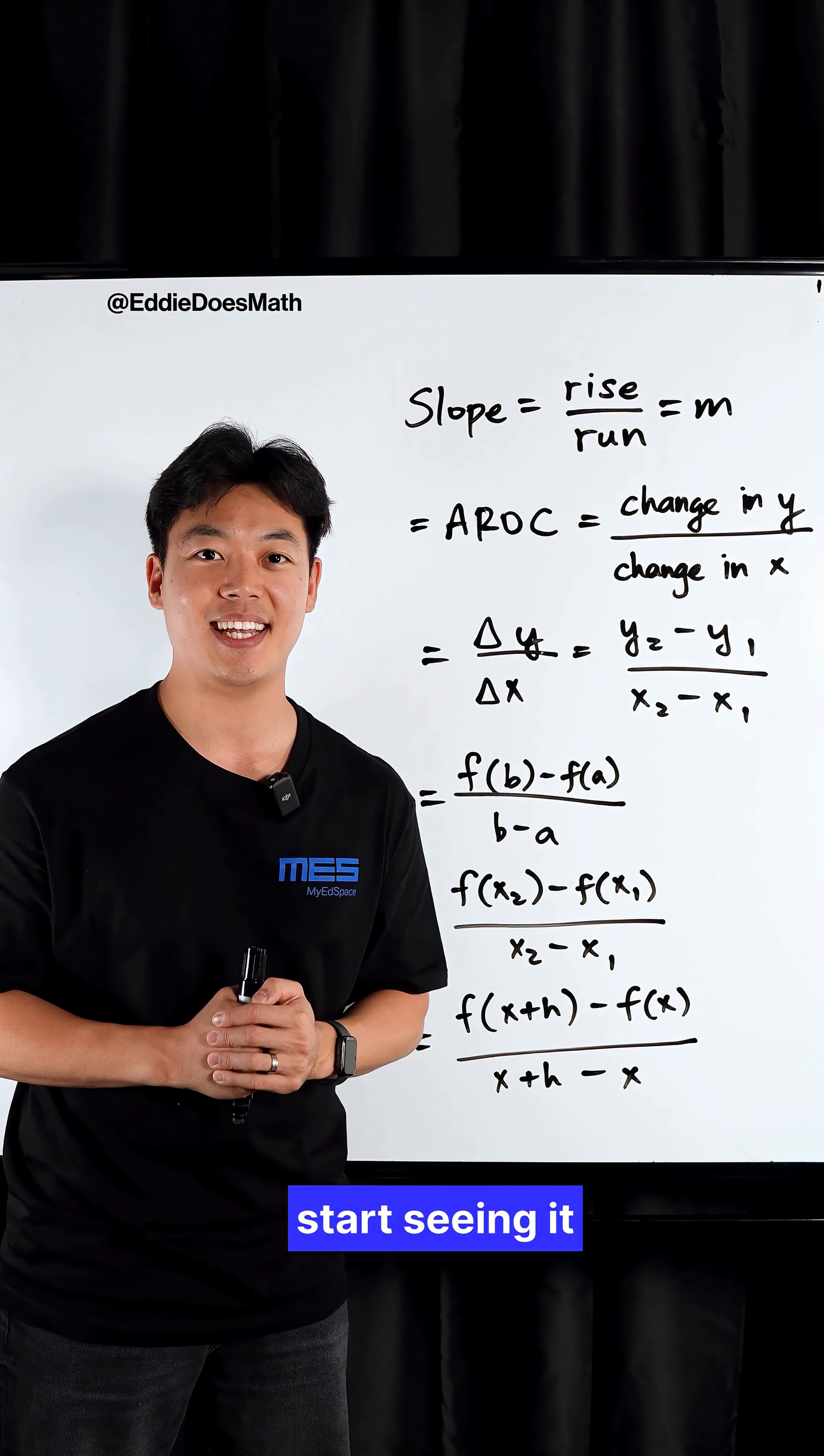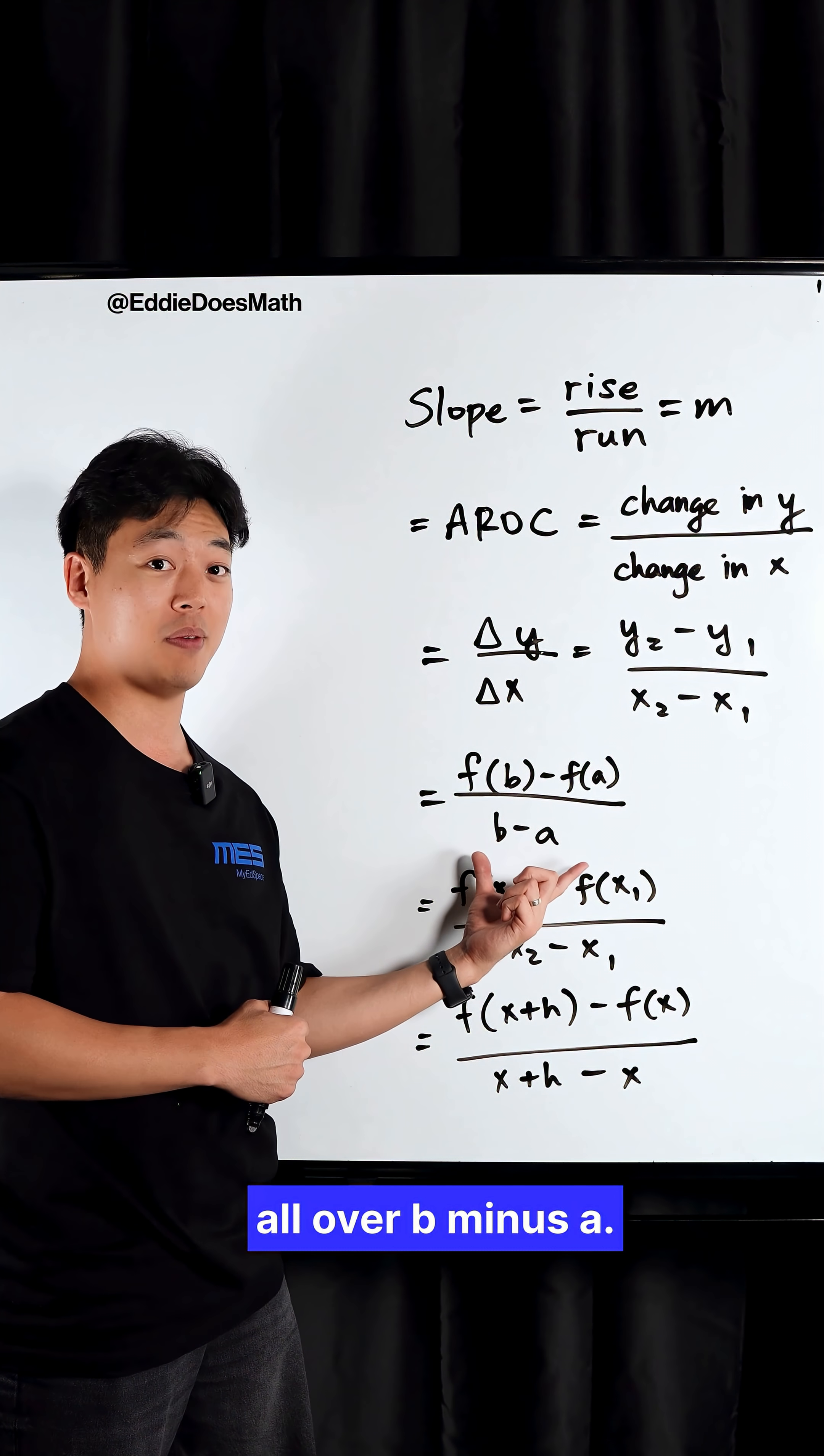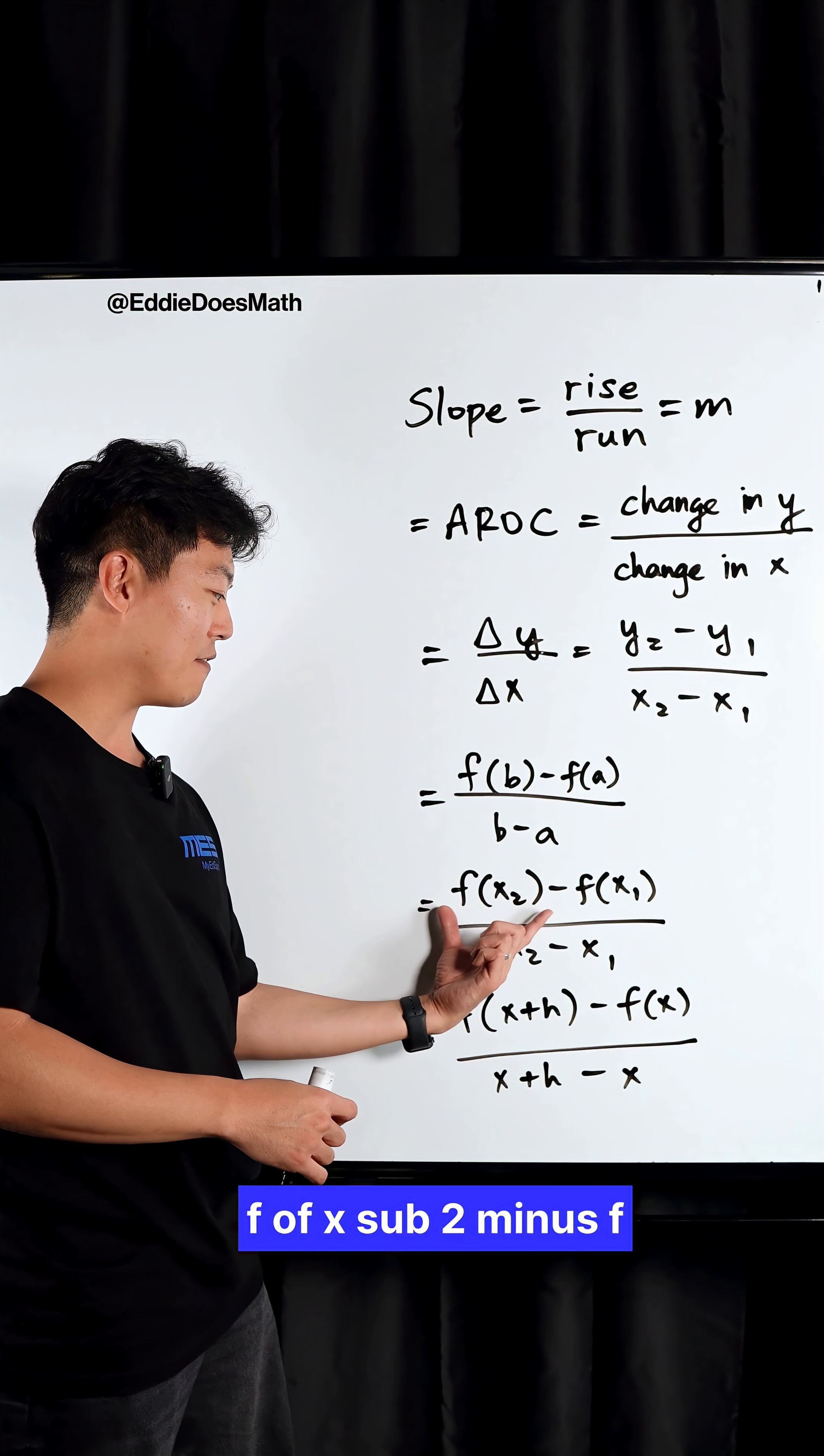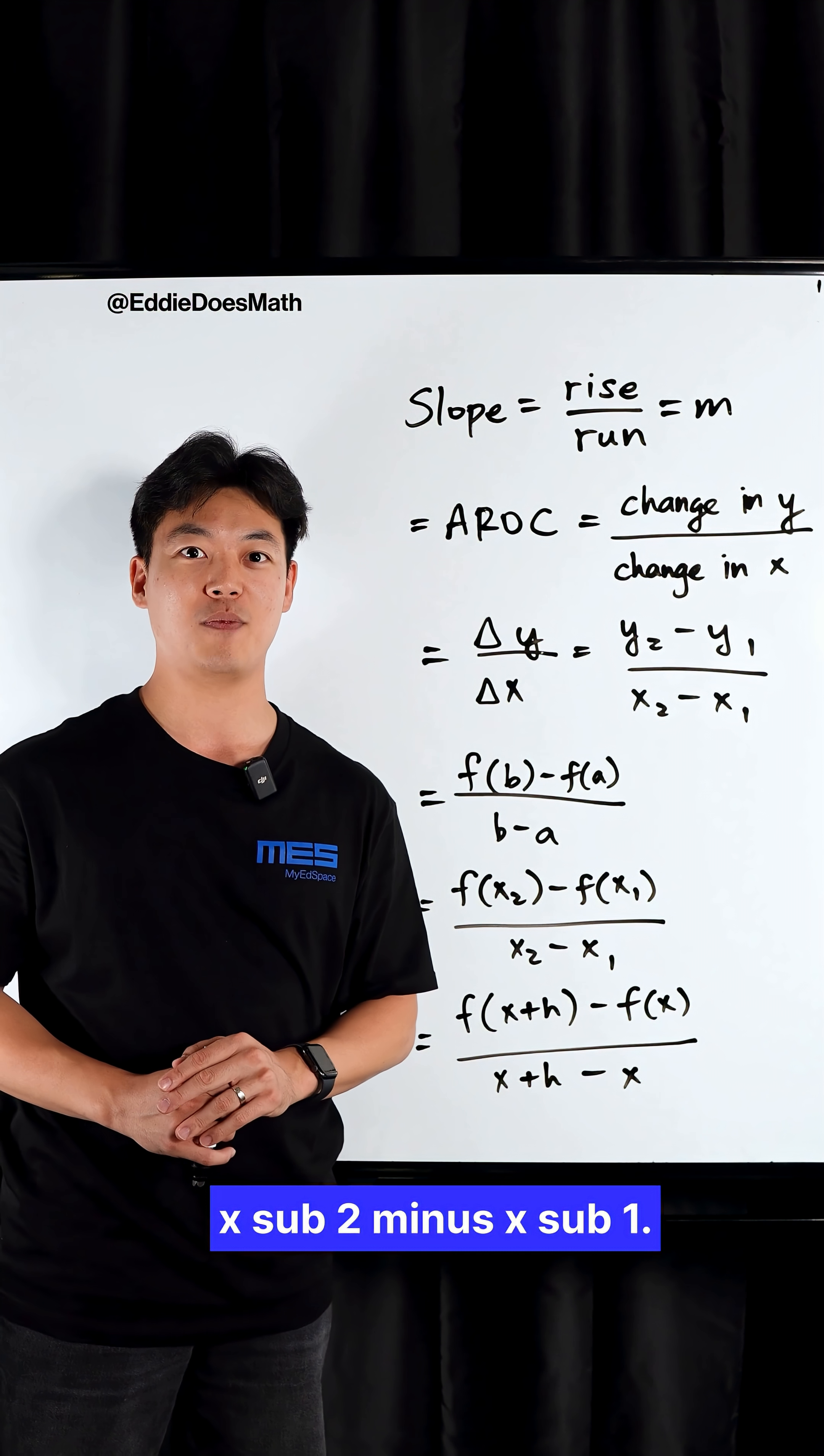In high school, you'll start seeing it in function notation: f of B minus f of A all over B minus A. The further you go in high school, you'll start seeing this as f of X sub 2 minus f of X sub 1 all over X sub 2 minus X sub 1.